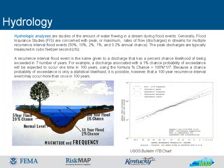Hydrologic analyses are studies of the amount of water flowing in a stream during flood events. Generally, flood insurance studies are concerned with peak or maximum rates of flow or discharges in streams for multiple recurrence interval flood events. The 50, 10, 2, 1, and 0.2% annual chance are the return periods commonly analyzed. The peak discharges are typically measured in cubic feet per second, or CFS. A recurrence interval flood event is the name given to a discharge that has a percent chance likelihood of being exceeded in a given number of years.